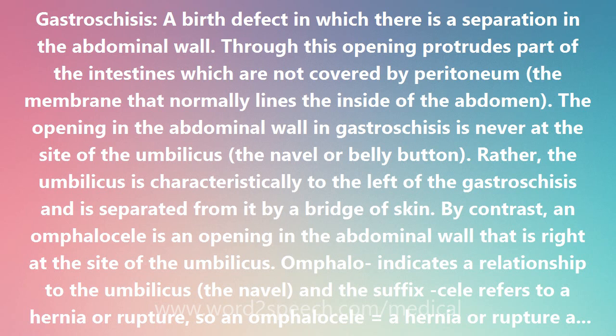The opening in the abdominal wall in gastroschisis is never at the site of the umbilicus — the navel or belly button. Rather, the umbilicus is characteristically to the left of the gastroschisis and is separated from it by a bridge of skin.